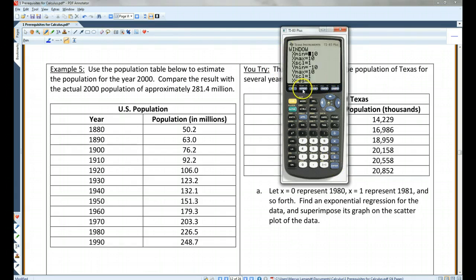Actually, let me do this. I'm going to change the window. Let's see, my x's go from 1 to 12, so I'll go from negative 1 to 13. My y's go from like 50 to 250, so I'll go from negative 1 to 50, and I'll have that go by 50s.